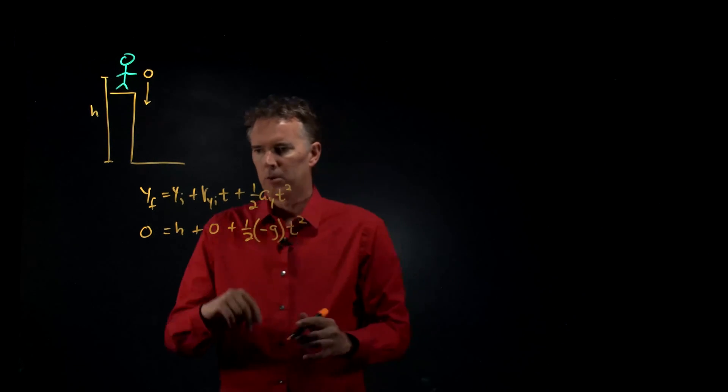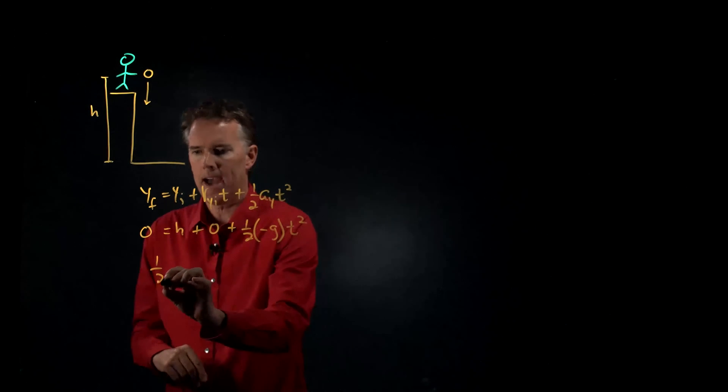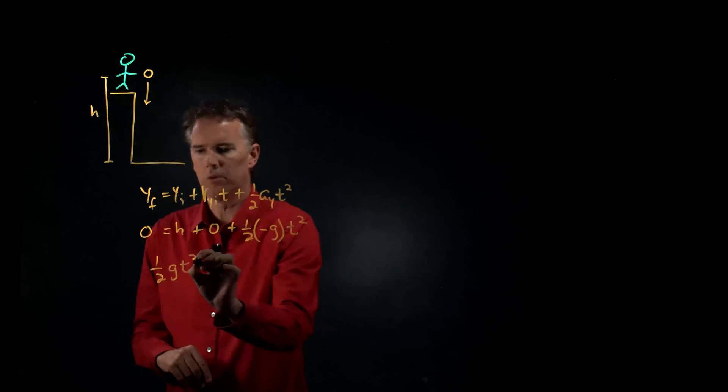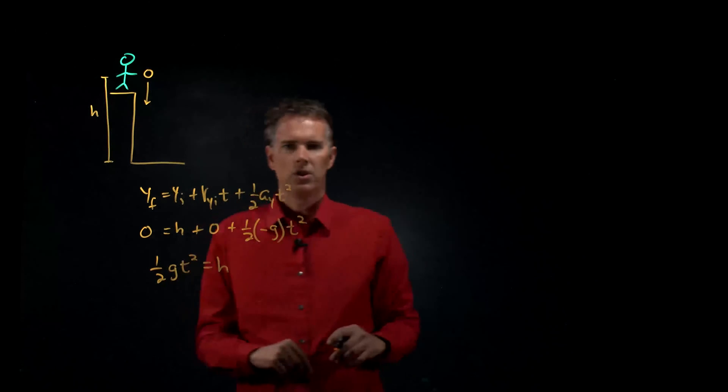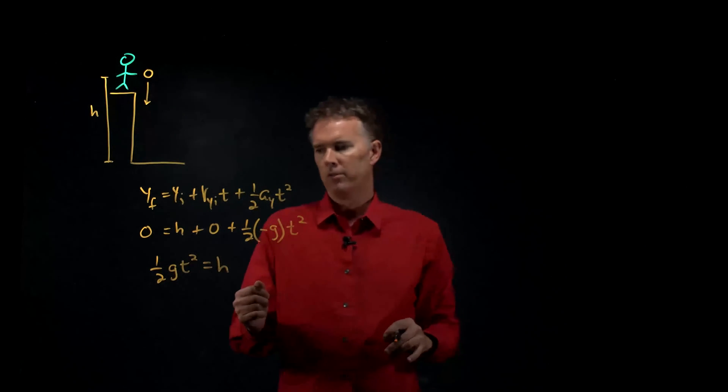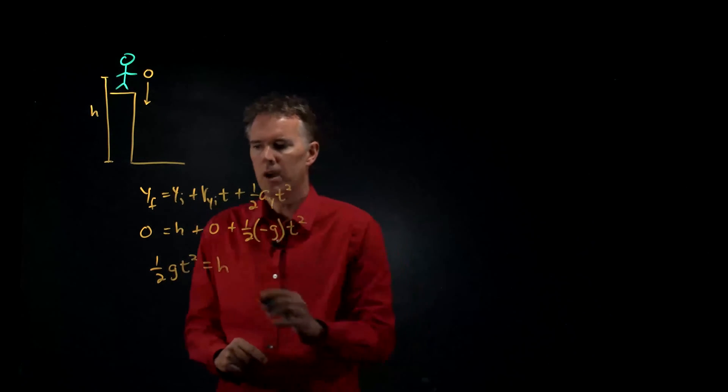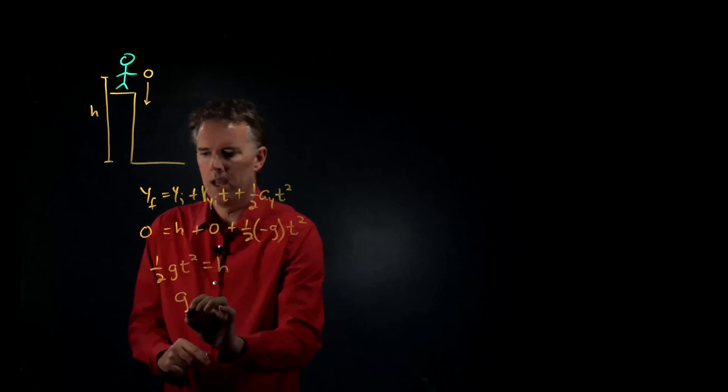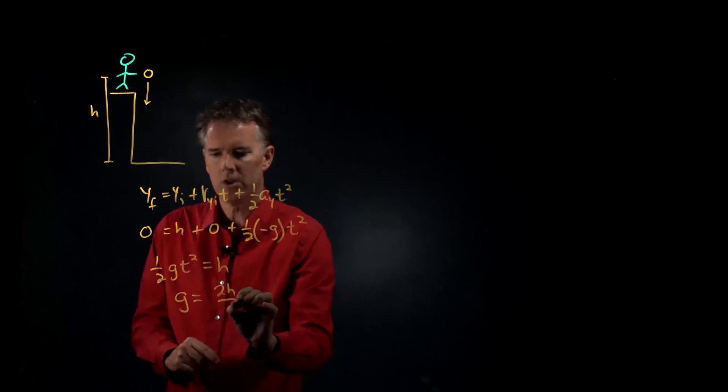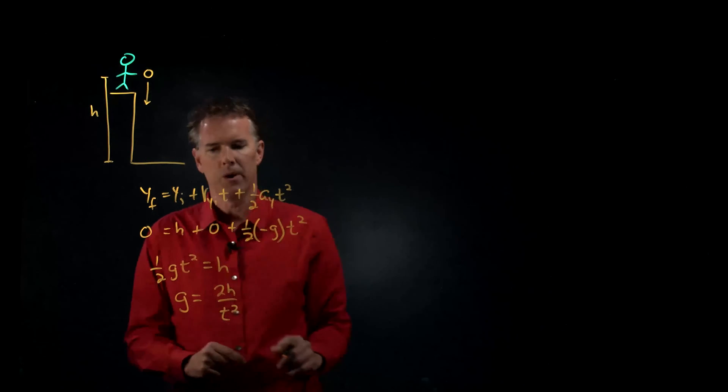Alright we can simplify this equation quite a bit. We get one half g t squared equals h. And now let's just solve this equation for g. If I multiply by 2 and divide by t squared I get g equals 2h over t squared.